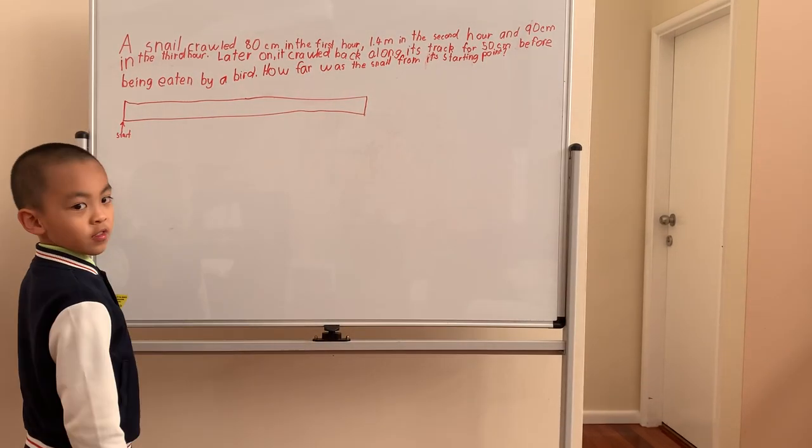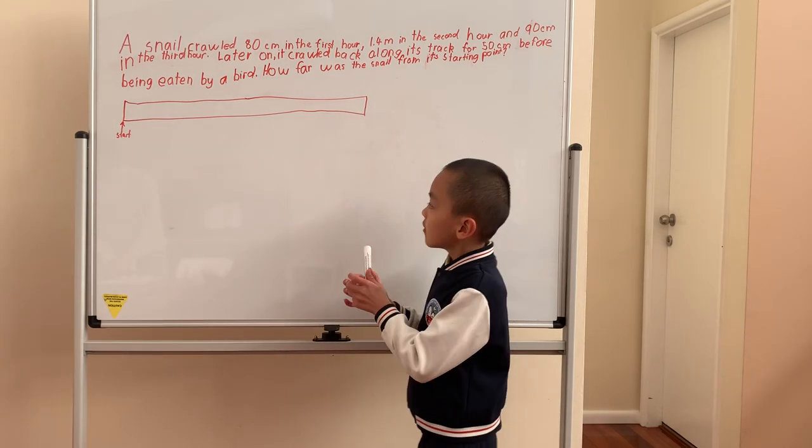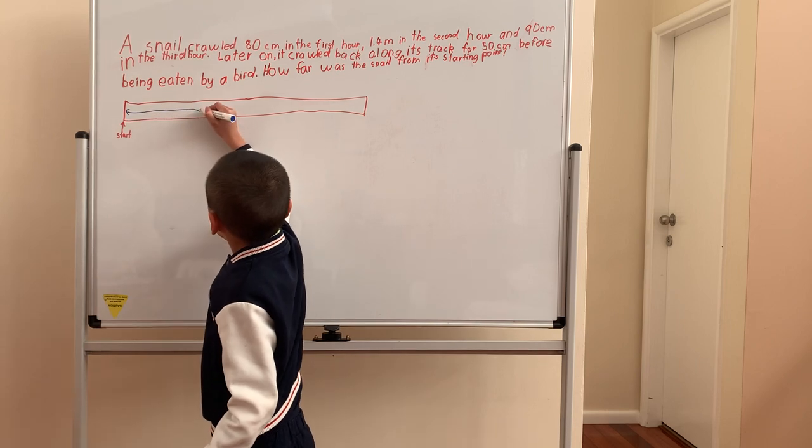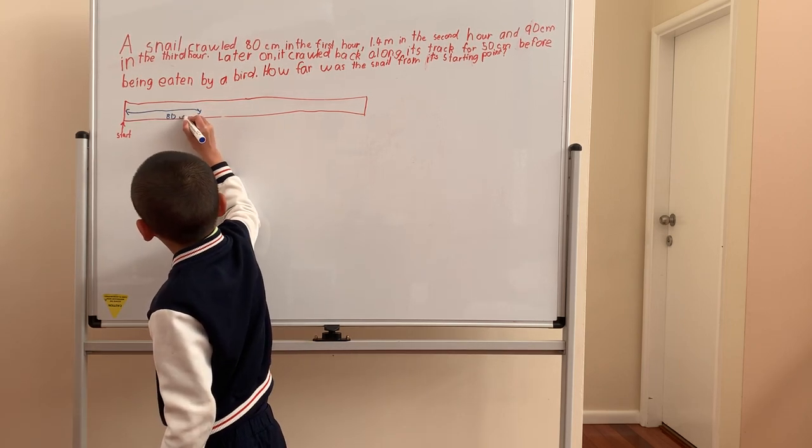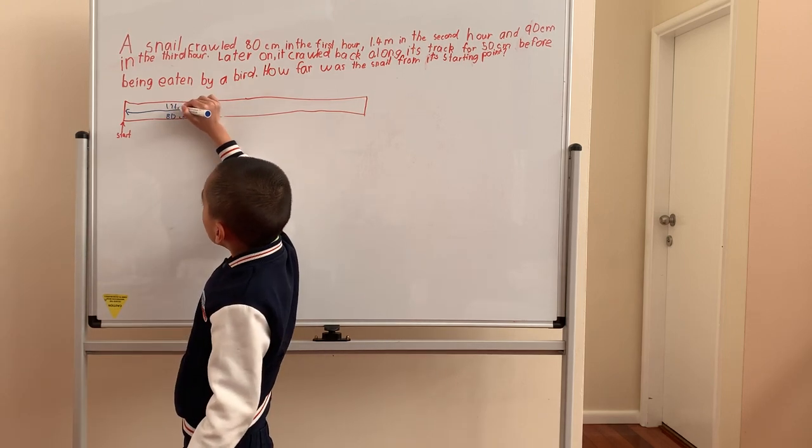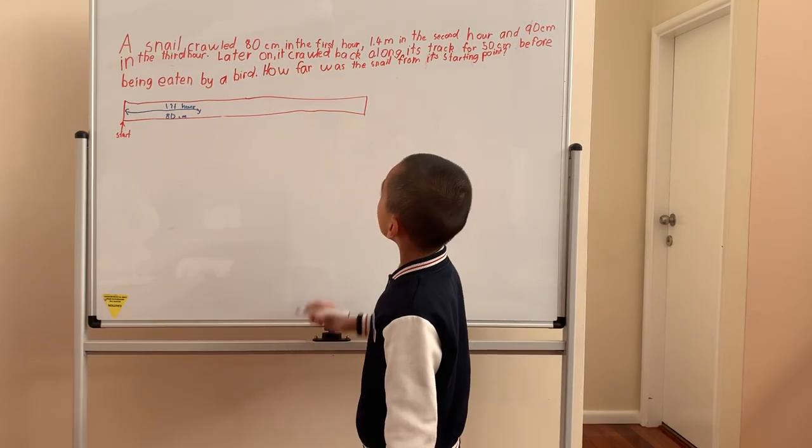So, if this was a snail, and this was a track, this was the first one. 80cm first. This will be the first one, 80cm.